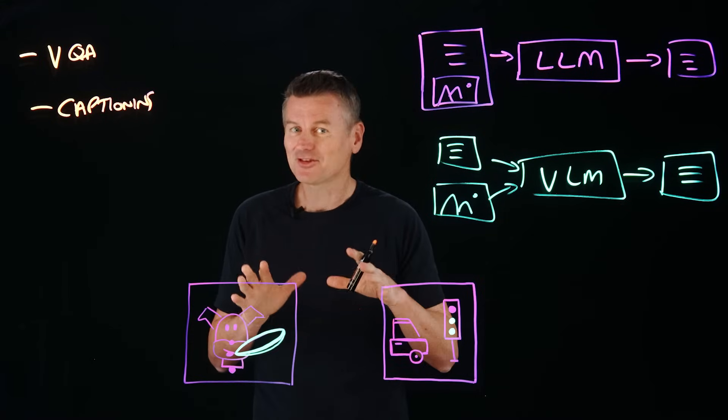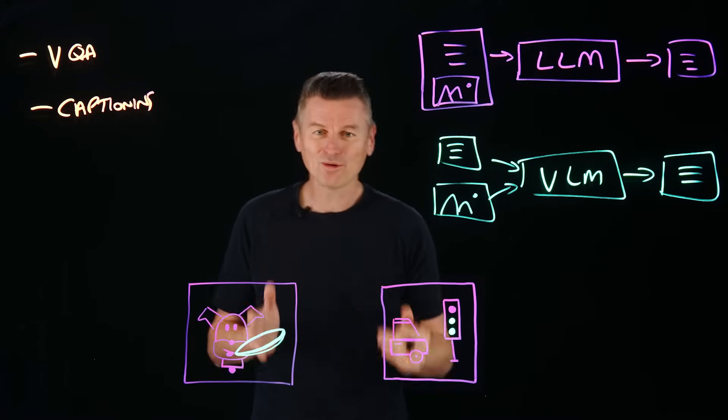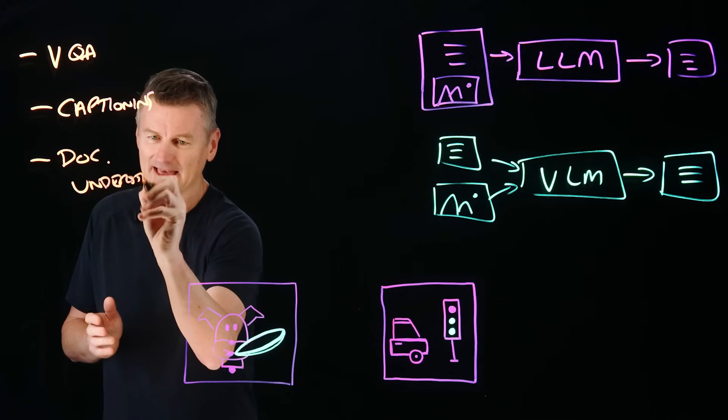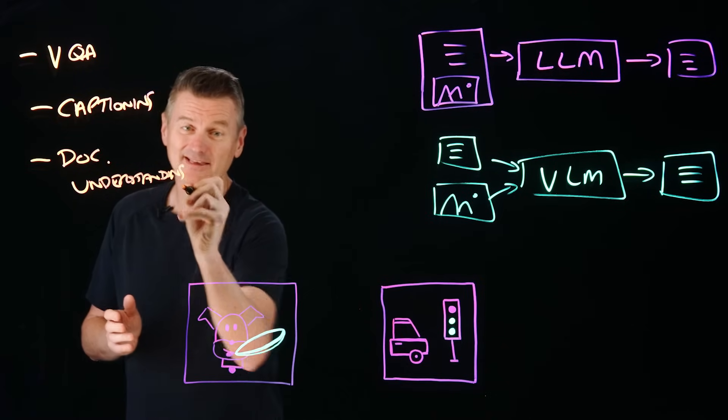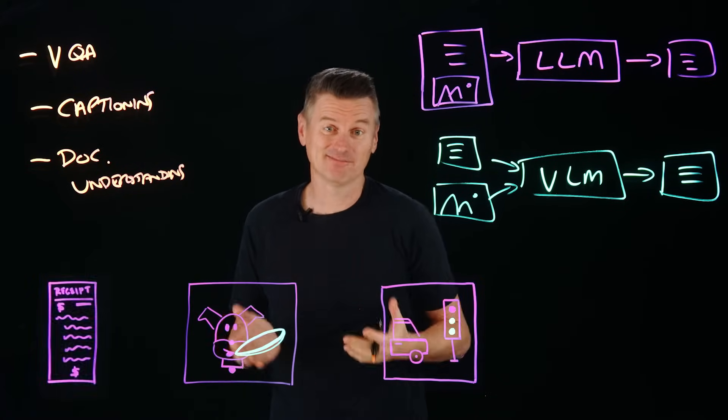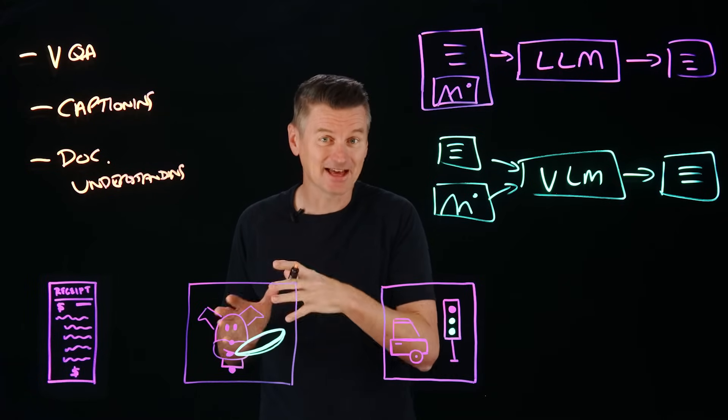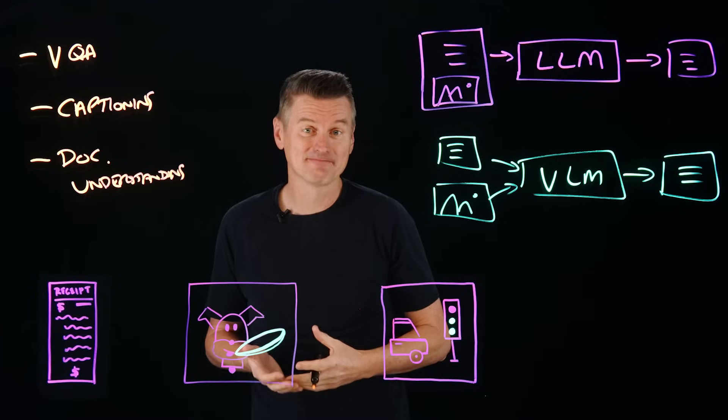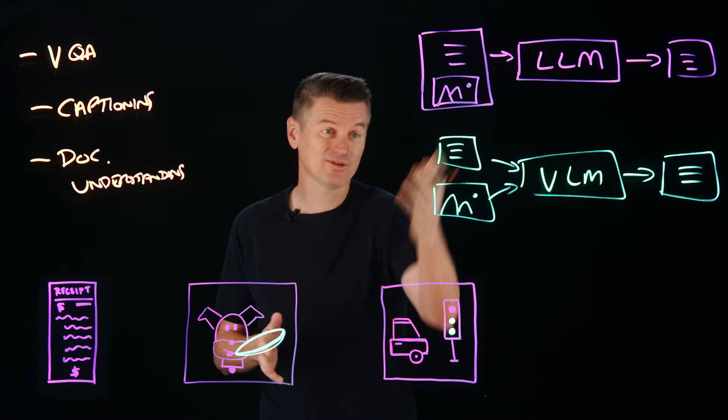But VLMs aren't just about photographs. They're also super useful for document understanding as well. So let's say you've uploaded a scanned receipt. The model can extract the text in that receipt, organize it, and then even summarize what it says.